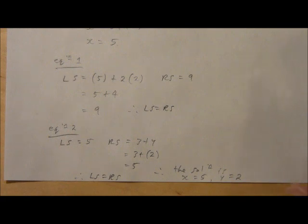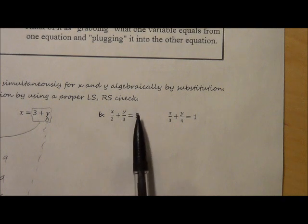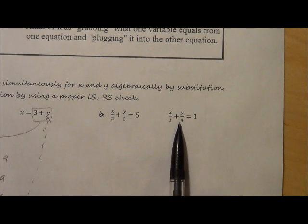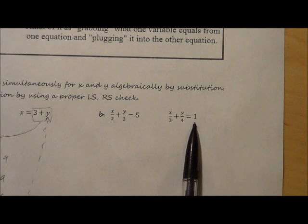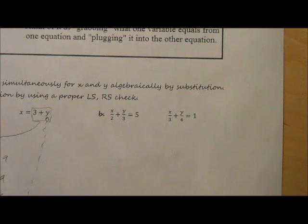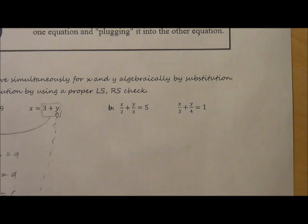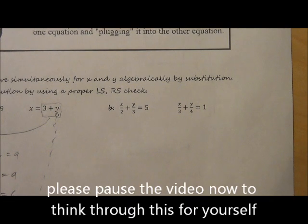Okay, so now let's take a look at example B, and it's a little more challenging. We see here that we have x over 2 plus y over 3 equals 5, and x over 3 plus y over 4 equals 1. We have to do the same thing. We need to solve this by substitution. Now take a few moments to see what the best way to substitute would be. Is there a really simple way? Do you have to do a lot of algebraic manipulation first to do some substitution?